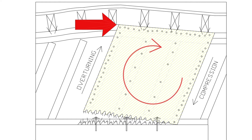If the bottom edge of this plywood had been nailed into blocks, as discussed in Part 3, the blocks would be lifted up off of the mud sill and the nails would be unable to transfer these earthquake forces into the mud sill and into the ground. This is another reason why nailed blocks or stapled blocks should be avoided in shear walls whenever possible.